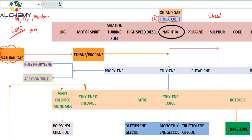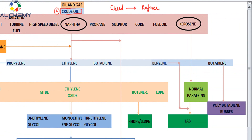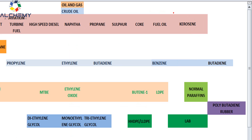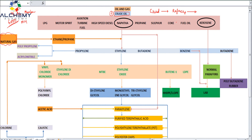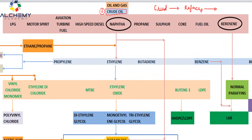This crude is processed in the refinery, and from the refinery we get direct products. First is LPG, which we use in households. Then motor spirit — that we use in vehicles — basically called gasoline or petrol. Then comes Aviation Turbine Fuel, used in aeroplanes, commonly called jet fuel. Then high-speed diesel, used in train engines, irrigation, and motor vehicles.